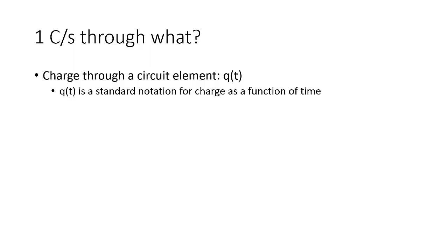Typically we denote charge through a circuit element as q of t. And I'm using the generic term circuit element rather than a specific term like a light bulb or a battery. Because I want to make it very clear that when we're talking about charge flowing through a circuit, it doesn't matter what it's flowing through.